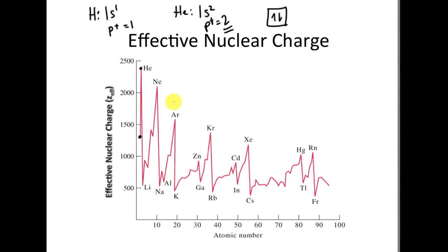The consequence of higher ZEFF: the atom gets smaller because ZEFF is larger, so it pulls the electrons more. As a result, electronegativity goes up and ionization energy goes up — the electron in the 1s² is going to be really hard to remove because of that higher pull of the nucleus.